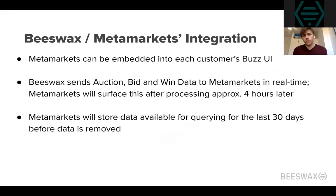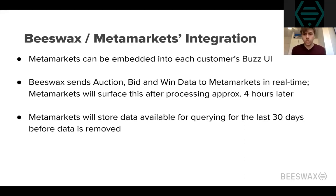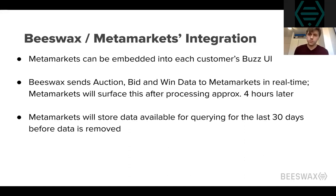The way Metamarkets gets data from us is we send the data in roughly real time. As soon as we get the data in our system — the auction, bid, and win data — we forward it to Metamarkets, and then Metamarkets will process that data, aggregate it, put it in a format that makes it efficient for fast query time, and then it shows up approximately four hours later in their platform for querying. That's not a strict SLA, but in practice over a lot of experience with the product, that's typically the return time. And Metamarkets will hold onto that data for 30 days before dropping it entirely.